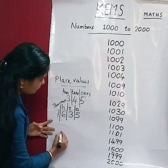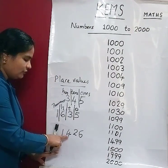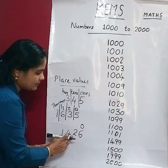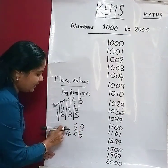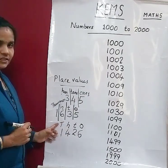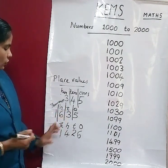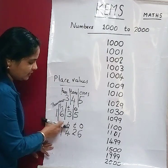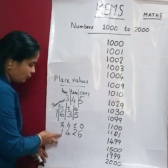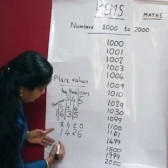Next number: 1426. So here — 6 is the 1s place, 2 is the 10s place, 4 is the 100s place, and 1 is the 1000s place. This is 1426. How can we count this number? 1426 — the H stands for hundreds.